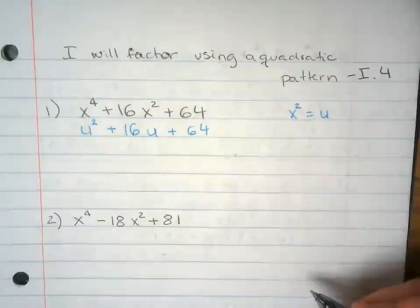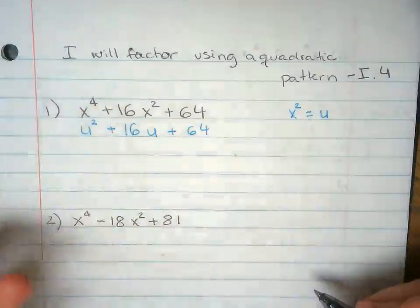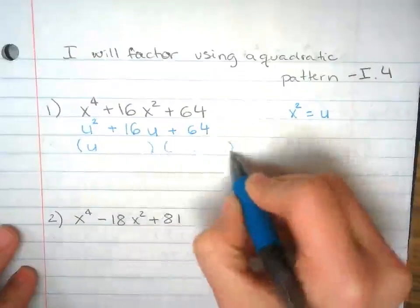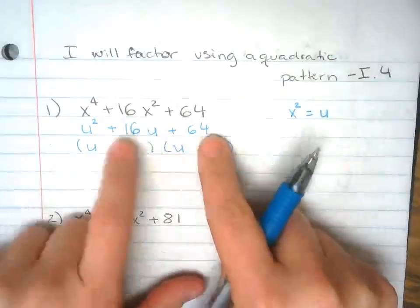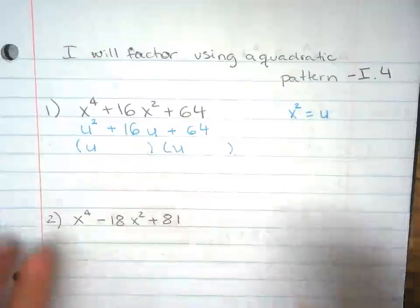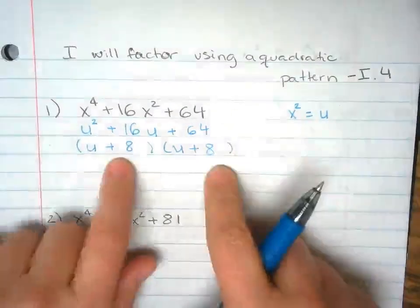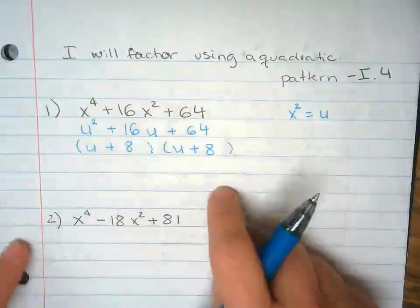Oh, look at that. Now we're going to factor mentally like we've done a million times. So two numbers that multiply to 64 and the same two numbers that add up to 16. 8 and 8. 8 times 8 is 64, 8 plus 8 is 16.